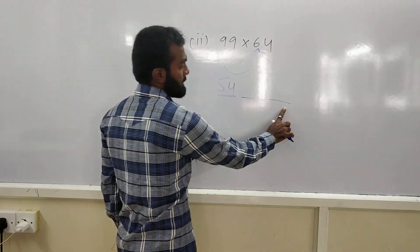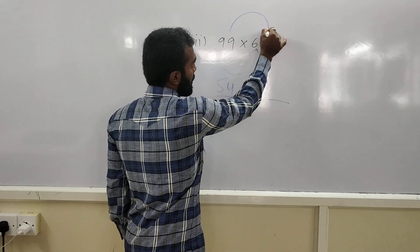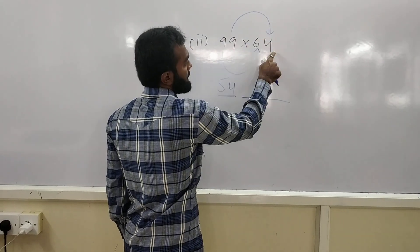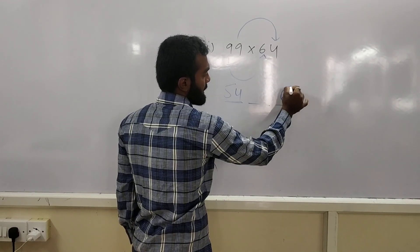And, to get the last number. Multiply the last number of 1st digit with last number of 2nd digit. 9, 4's are 36. How to write? Write the 6 here. Write 6 here.